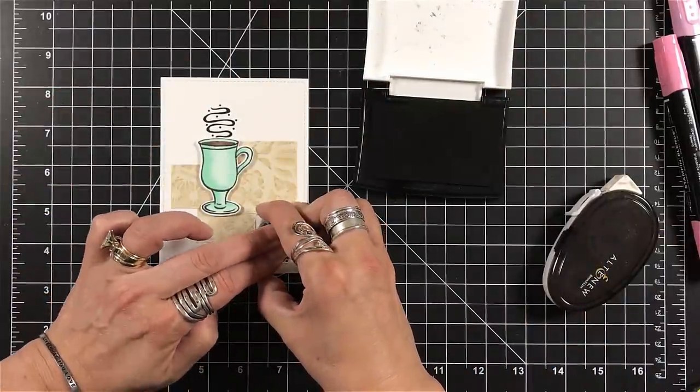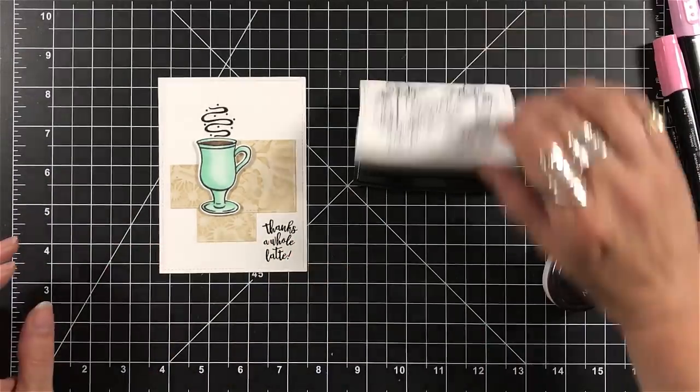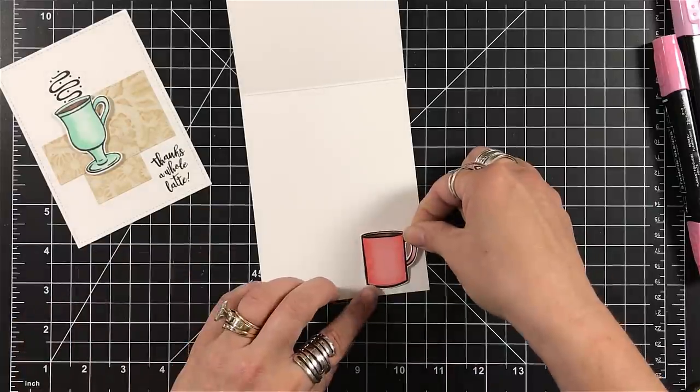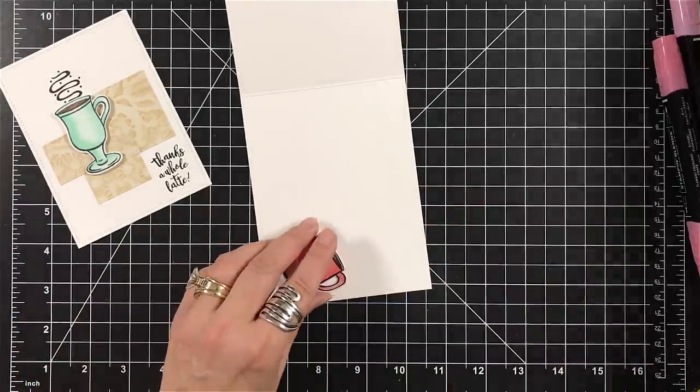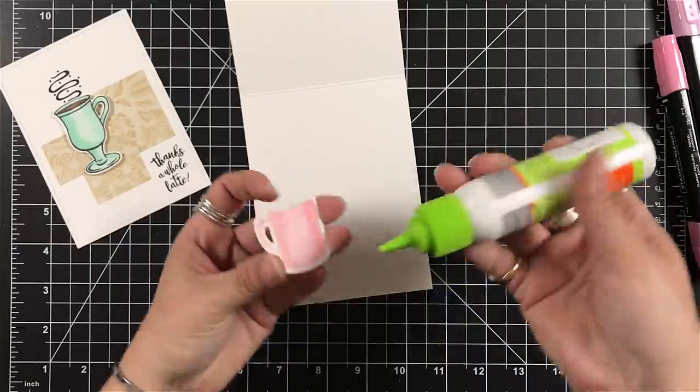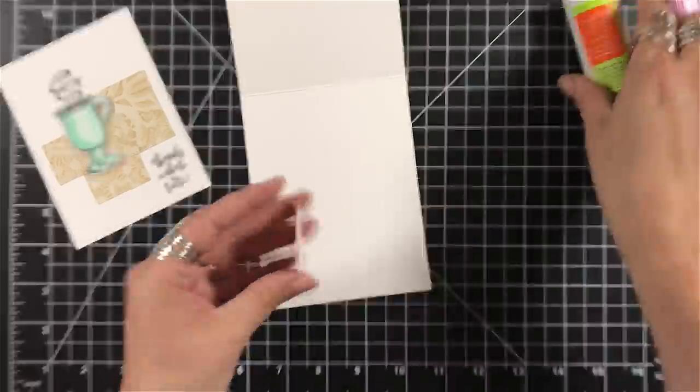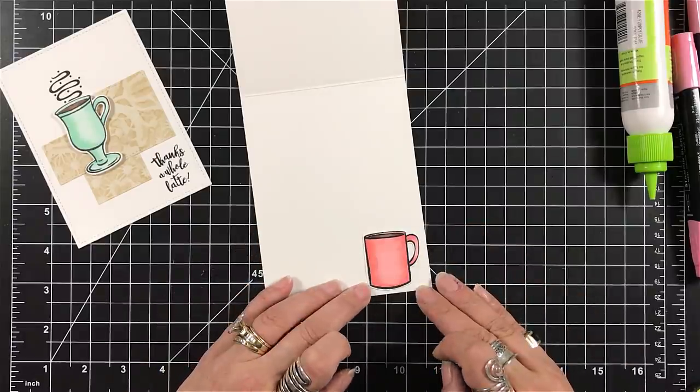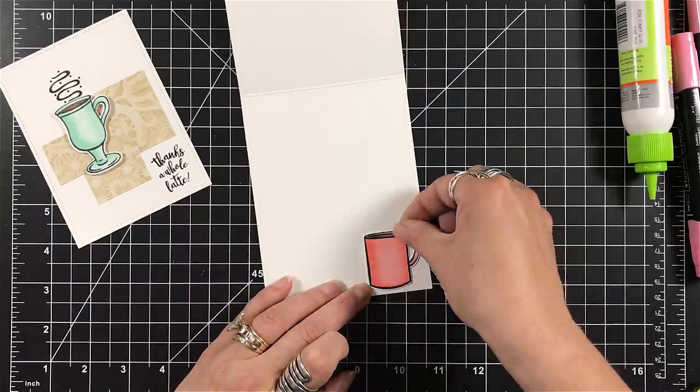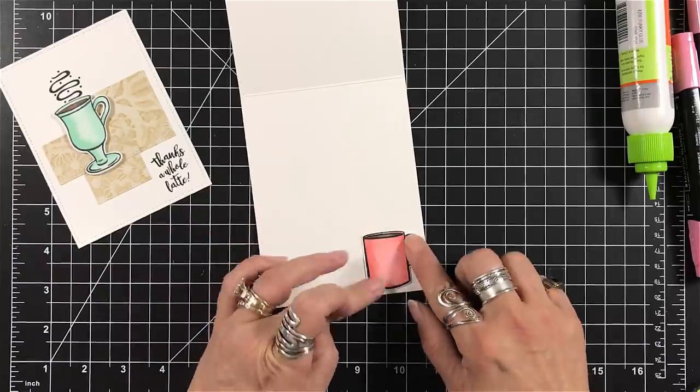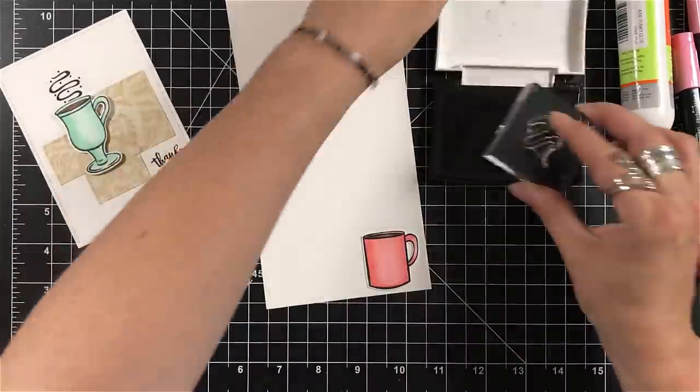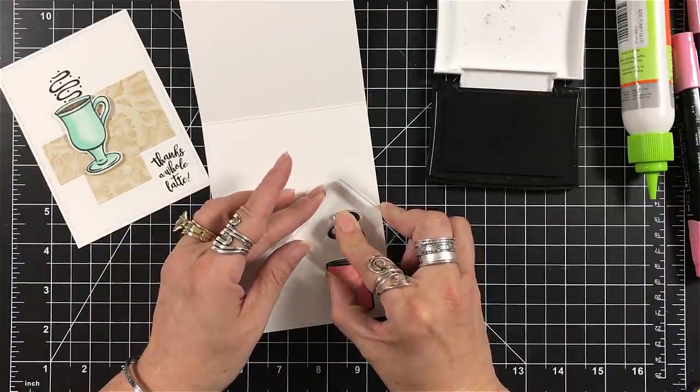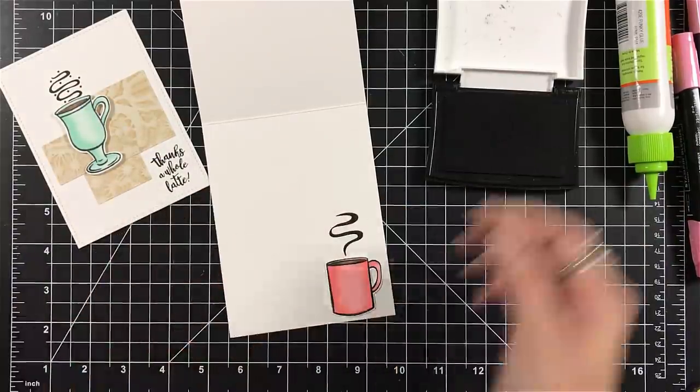The sentiment that I chose here says thanks, a whole latte. So I'm going to set that aside. And then from inside my card base, I'm actually going to use the coral one and I'm going to adhere that down on the right hand corner. And then I want to make sure that that also has a swirl that comes off of it. And I'm actually going to add a sentiment on the inside of this card as well.